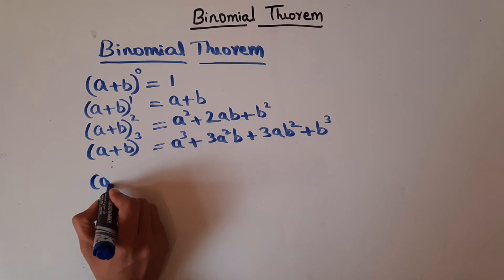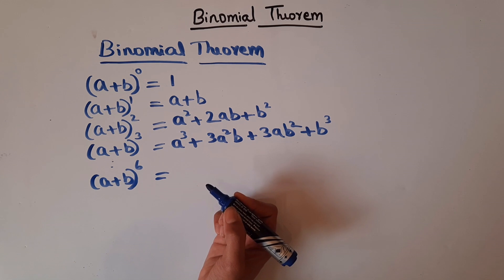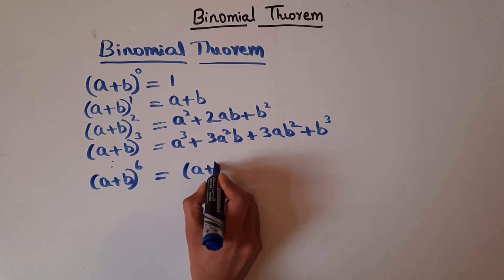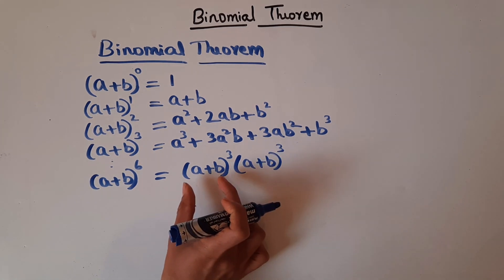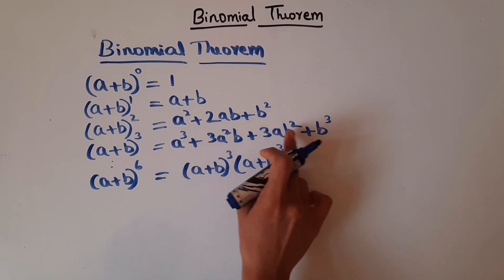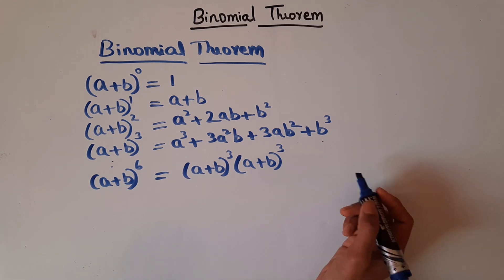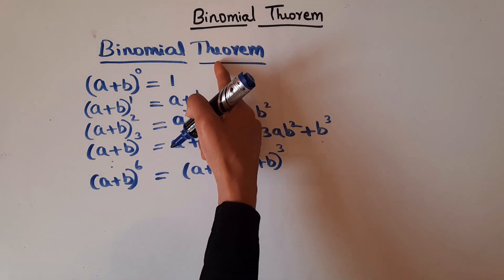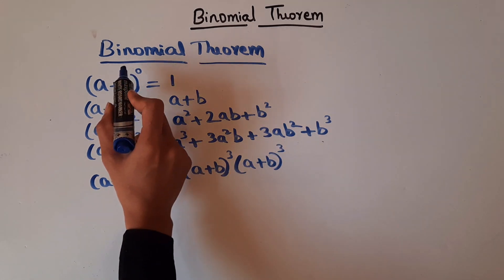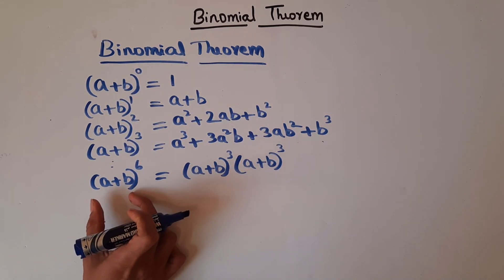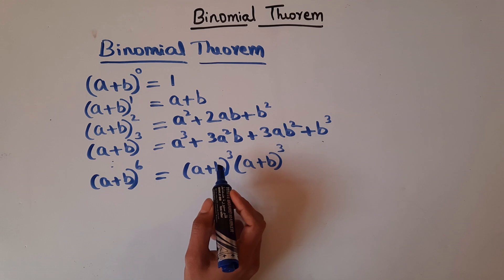Now if I ask what is (a + b) to the power 6, this we have not studied. You might say we can write it as (a + b)³ × (a + b)³, but you have to expand this first — that has 4 terms, and again 4 terms, and you have to keep multiplying. So this is a long process. In order to overcome this, we use binomial theorem to solve (a + b) to the power 6 — with the help of binomial theorem we can solve binomial expressions with higher indices. Here 'indices' means the power.